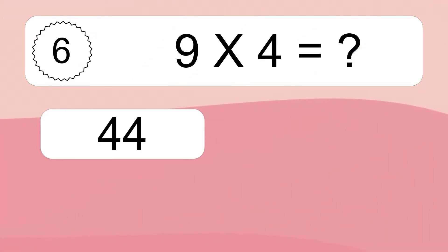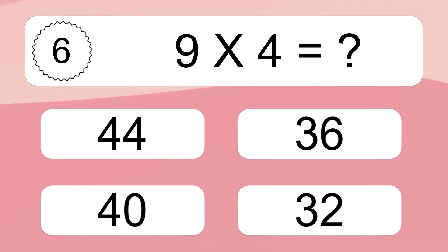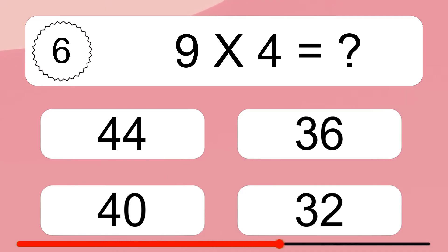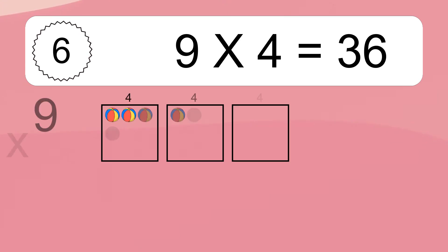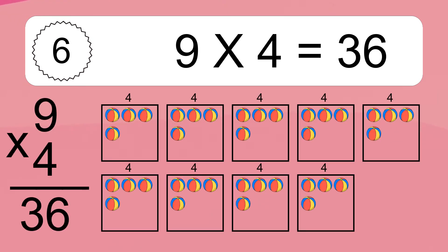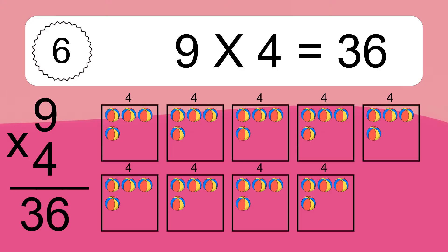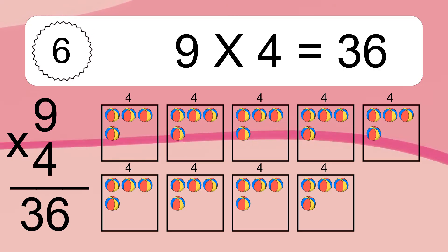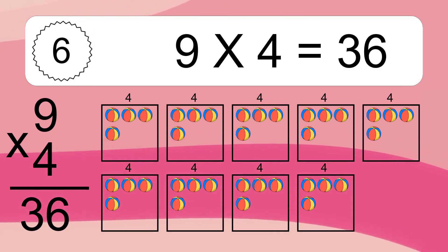Nine times four equals what? Nine times four equals 36. We have nine boxes and each box has four colorful balls inside. If you count all the balls in all the boxes together, you will have nine times four balls. This equals 36 balls.